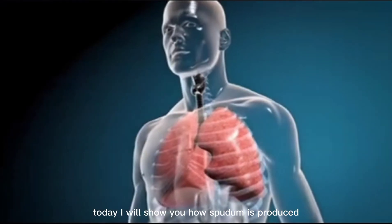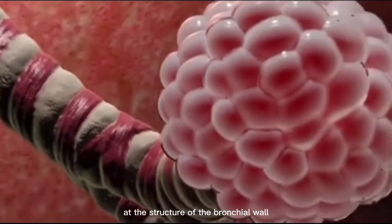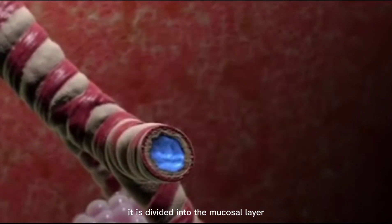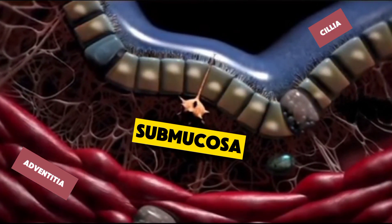Today I will show you how sputum is produced. First, let's take a look at the structure of the bronchial wall. From the inside to the outside, it is divided into the mucosal layer, submucosal layer, and outer membrane.